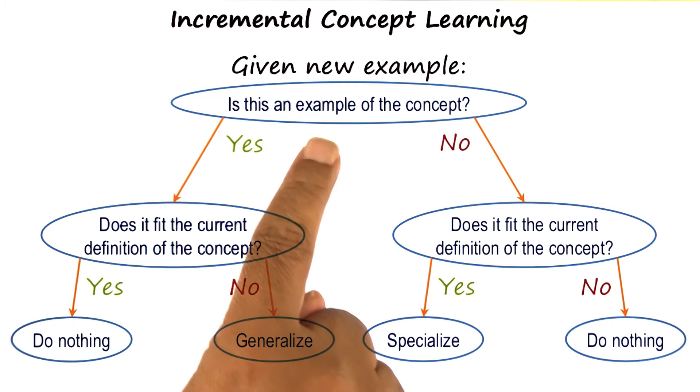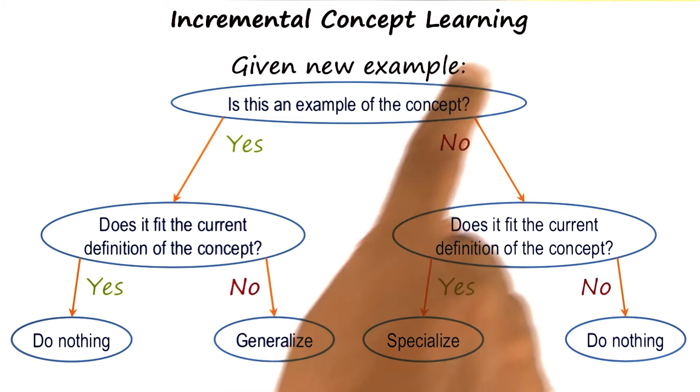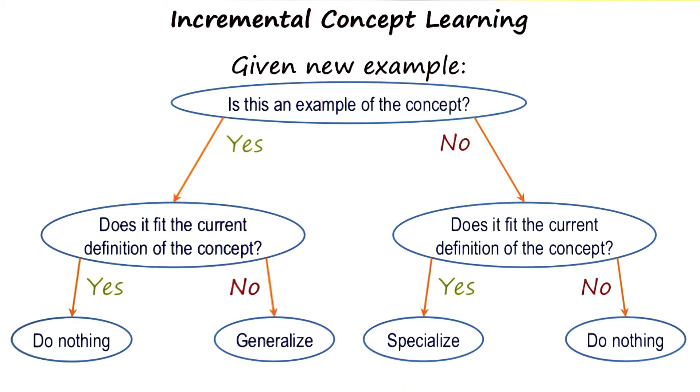On the other half of the tree, if this example is not a positive instance of the example, then we can ask ourselves, does the current definition of the concept cover it? If it doesn't cover it, it shouldn't cover it. And if it doesn't cover it, then we don't have to do anything.